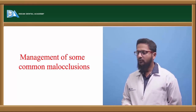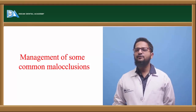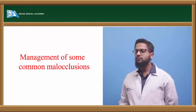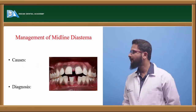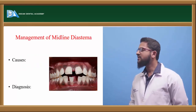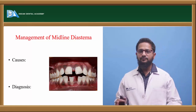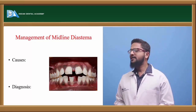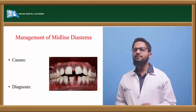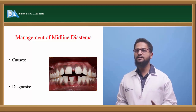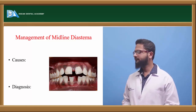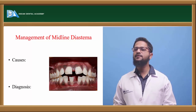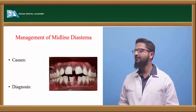Hello everyone. Now we'll see management of some most common malocclusions which we usually come across in our clinical practice. First is midline diastema. What exactly does midline diastema mean? It is actually nothing but spacing present between two central incisors. Whenever spacing between two central incisors is present, it is called as midline diastema.